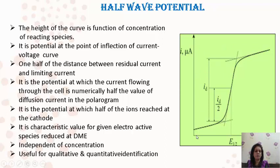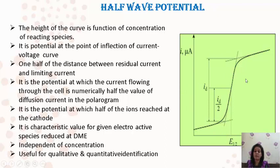Half-wave potential: from the polarogram, under applied voltage, the current produced is in microamperes. The height of the curve is a function of the concentration of the electroactive species — how much Id is produced depends upon that concentration. One half of the diffusion current distance from the residual current gives the value of E½ — the half-wave potential calculated from polarography. This is a characteristic value for a particular metal ion under study and is independent of concentration. It is useful for both qualitative and quantitative analysis.